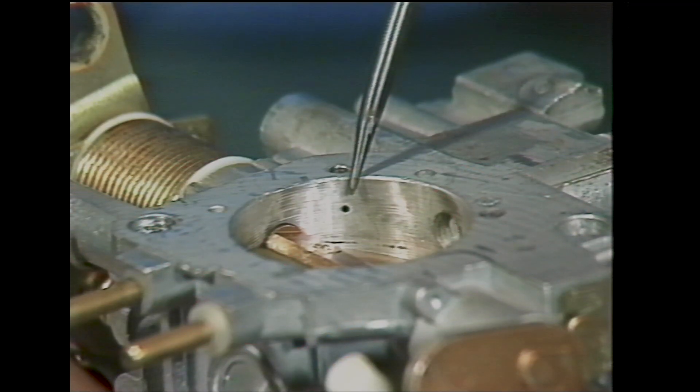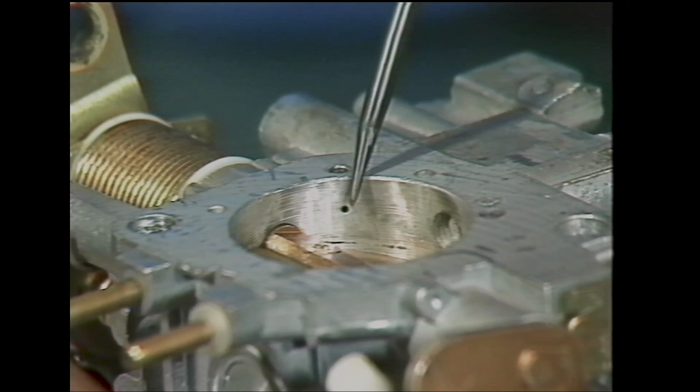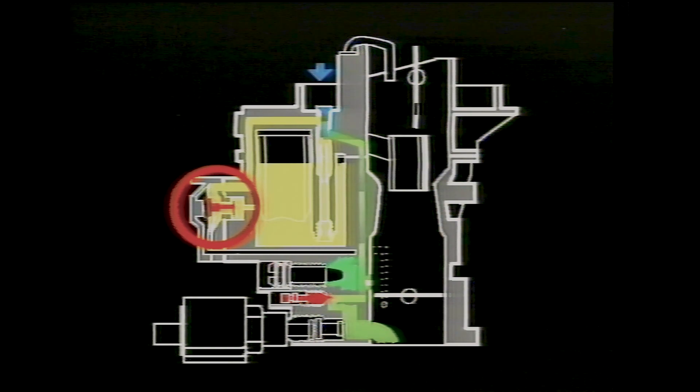With the throttle closed, the depression below the valve acts on this drilling, which in turn pulls the diaphragm against the return spring until the O-ring on the end of the valve closes the hole from the float chamber. When the throttle valve is opened, the return spring overcomes the lessening depression and moves the diaphragm back, opening the hole from the float chamber.